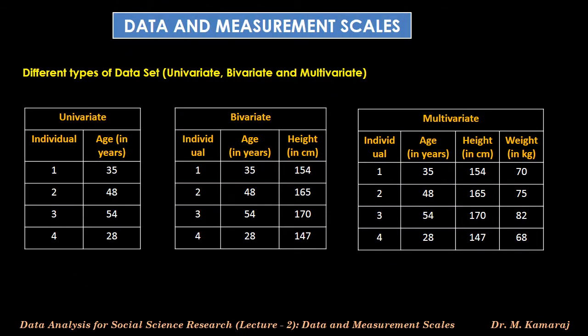Understanding different types of datasets is also important in statistics. Datasets are categorized into univariate, bivariate, and multivariate based on the number of variables. A dataset consisting of only one variable is called univariate data. For example, in the first table, age of individuals is given: 35, 48, 54, and 28 years.